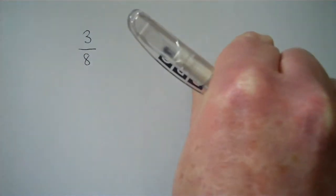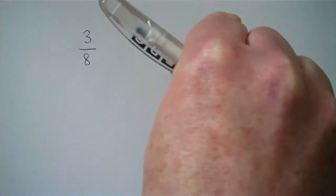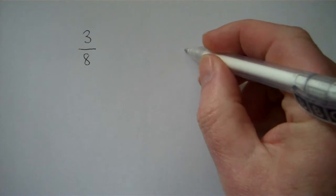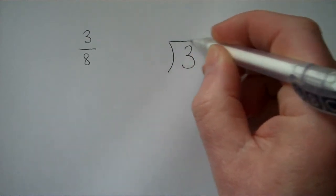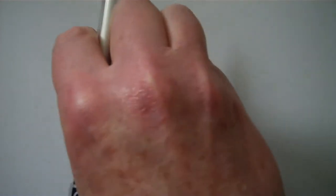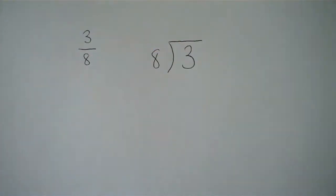Let's topple the fraction over. Remember, so the 3 goes on the right and the 8 on the left. So you've got 3, you're going to divide it by 8.